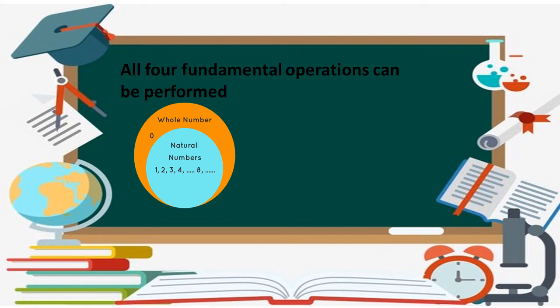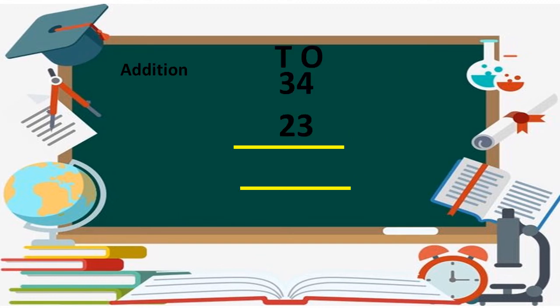All four fundamental operations can be performed on whole numbers: addition, subtraction, multiplication and division. Let me do addition with whole numbers. Here I have two-digit numbers made with ones and tens. When we do addition, first we add the ones: four plus three is seven. Then we add the tens: three plus two is five. So the addition of 34 and 23 is 57.